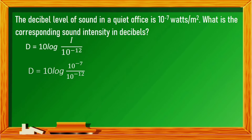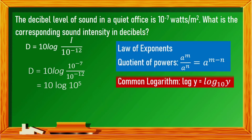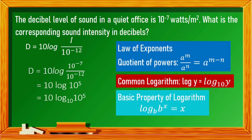To solve this, let us apply the law of exponents: quotient of powers. Since the bases are equal, we subtract their exponents. Negative 7 minus negative 12 is 5. Since there is no written base, this is a common logarithm with base 10. Since the bases are equal, log base 10 of 10 raised to the power of 5 equals 5. Then 10 times 5 is 50. This means the decibel level of a quiet office with a sound intensity of 10 raised to the power of negative 7 is 50 decibels.